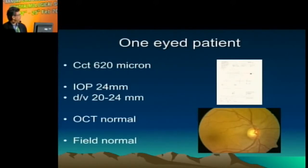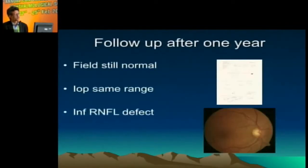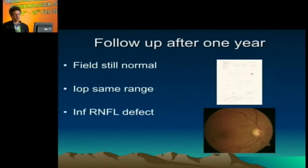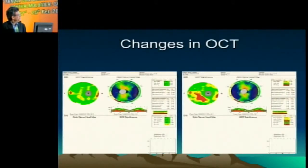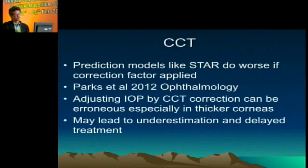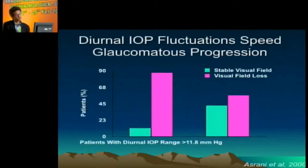As for thick corneas, I had a case — a one-eyed patient with an absolutely normal disc and field, diurnal variation around 20 to 24, and corneal thickness of 620. I decided not to treat. One year later, a wedge defect appeared on the disc, and the OCT, which had been normal, now showed changes. Parks had said that if you neglect thick corneas, you can run into problems. So please be careful: if it is a thick cornea, don't assume you won't treat — be very careful and follow them regularly.